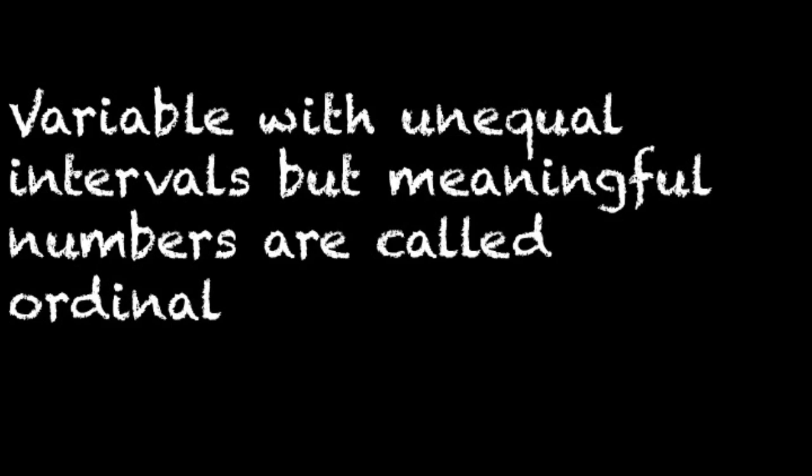So we need to do some fancy stats to deal with variables like this. Variables without equal intervals, but where the numbers are meaningful, are called ordinal variables. To decide between the other types of continuous variables, we need to know if the variable has a true zero. You've heard this in class, and maybe you don't quite get it — it is a bit confusing. So what do we mean by true zero? Well, if it's possible to have an objective lack of something, that scale has a true zero.